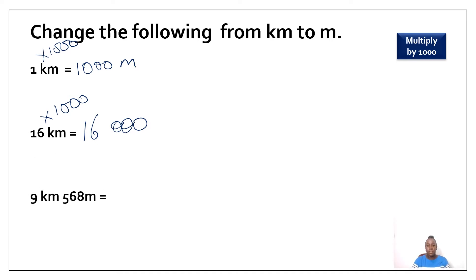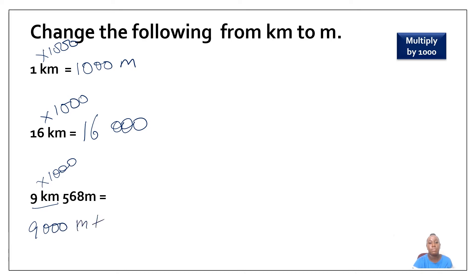Nine kilometers, five hundred and sixty-eight meters — I would like to convert this to meters. I need to multiply that nine kilometers by one thousand. That's going to give me nine thousand meters, plus my five hundred and sixty-eight meters. That's going to give me a total of nine thousand five hundred and sixty-eight meters.